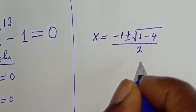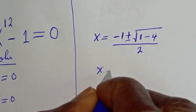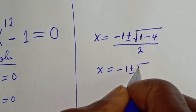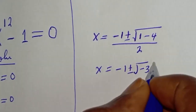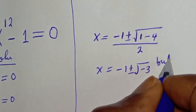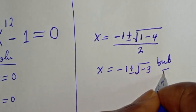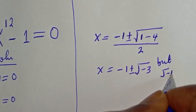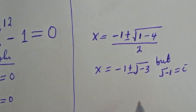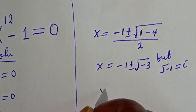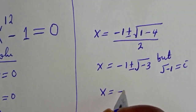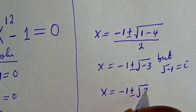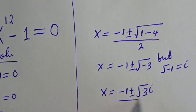s is equal to minus 1 plus or minus square root of 1 minus 4 over 2. Then s is equal to minus 1 plus or minus square root of minus 3.